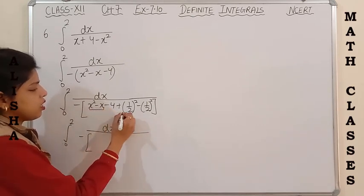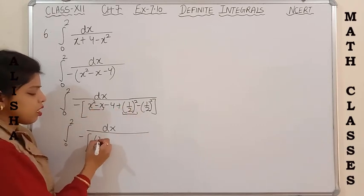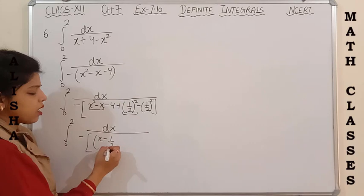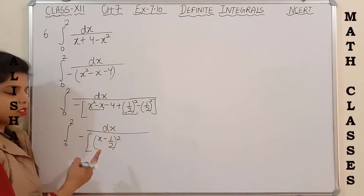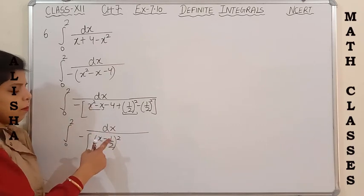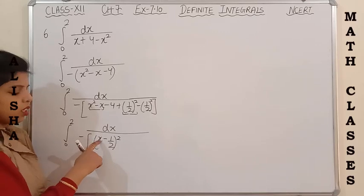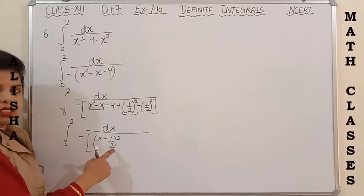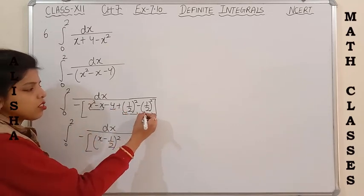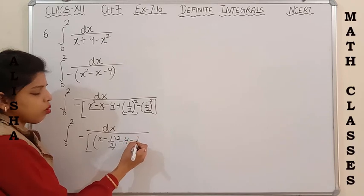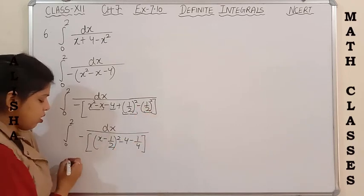Using the three terms x² minus x plus (1/2)², it becomes the formula (x - 1/2)². You can observe this is in the form of (a - b)²: a² is x², b² becomes (1/2)², and -2ab gives minus 2 times x times 1/2, where 2 cancels and we get minus x. The leftover terms are minus 4 and minus (1/2)², that is minus 1/4.